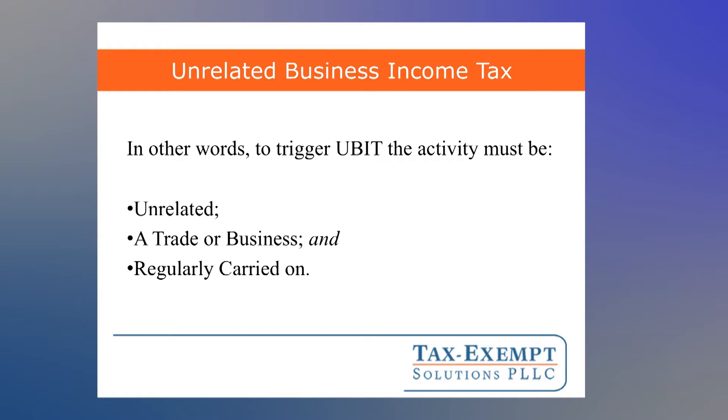To trigger UBIT, an activity must be unrelated, a trade or business, and regularly carried on. If any one of these three elements doesn't apply, then there's generally no UBIT. I should mention that this is just the basic UBIT test — there are a whole lot of special rules and modifications that we'll look at in another webinar. But it's important to apply this basic three-part test to every activity that generates revenue to see if UBIT might apply.